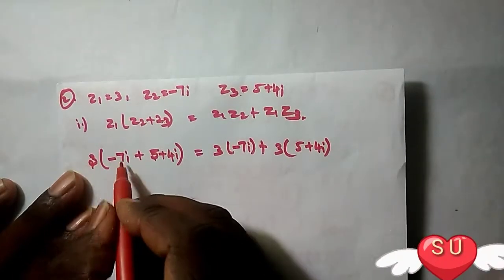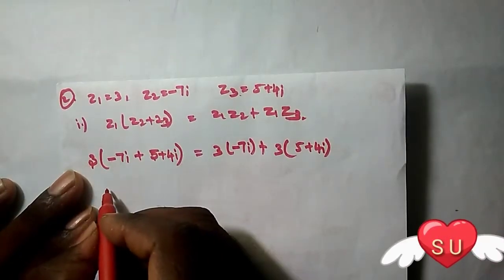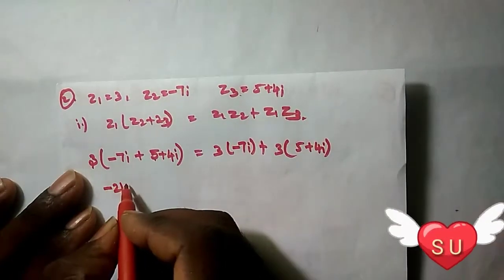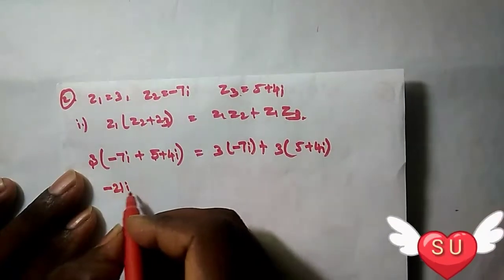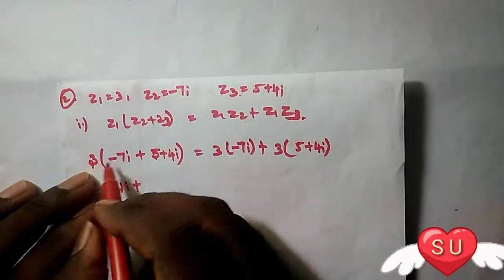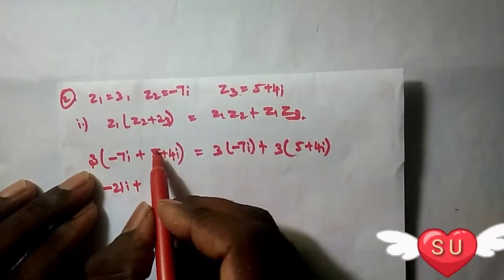So, 3 times 7 are 21, giving minus 21i, plus 3 times 5.